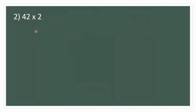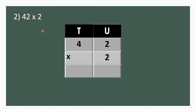Next, we will arrange it in the vertical form. First we shall multiply 2 by 2. 2 twos are 4. Now we shall multiply 2 by 4. 2 fours are 8. So the product is 84.